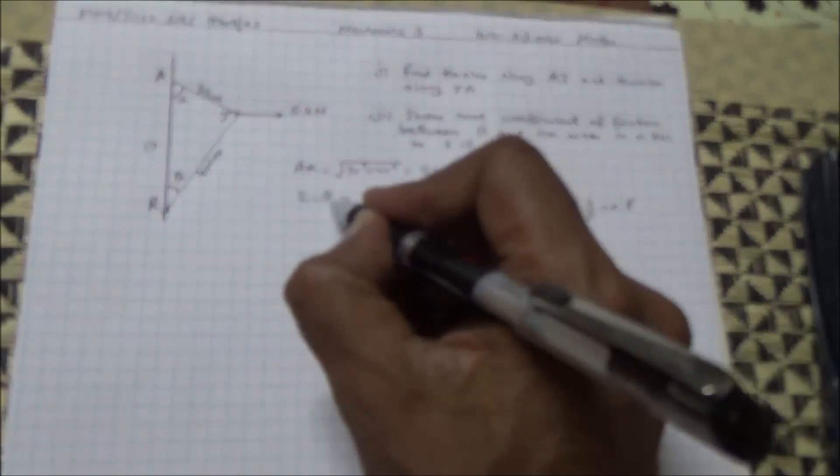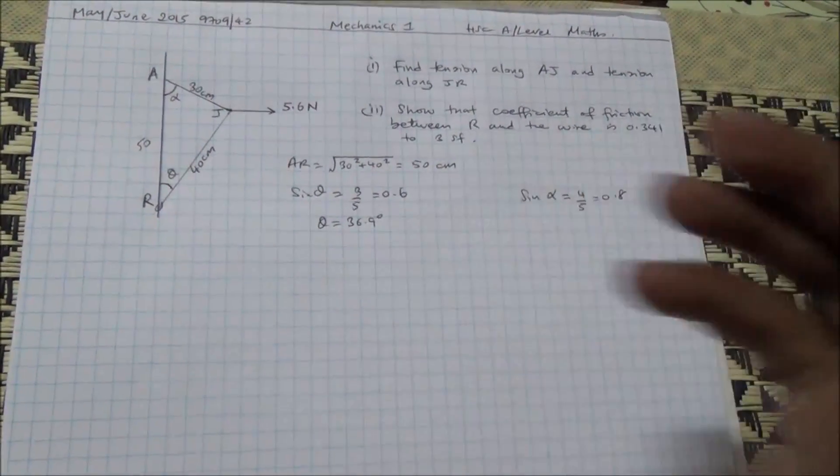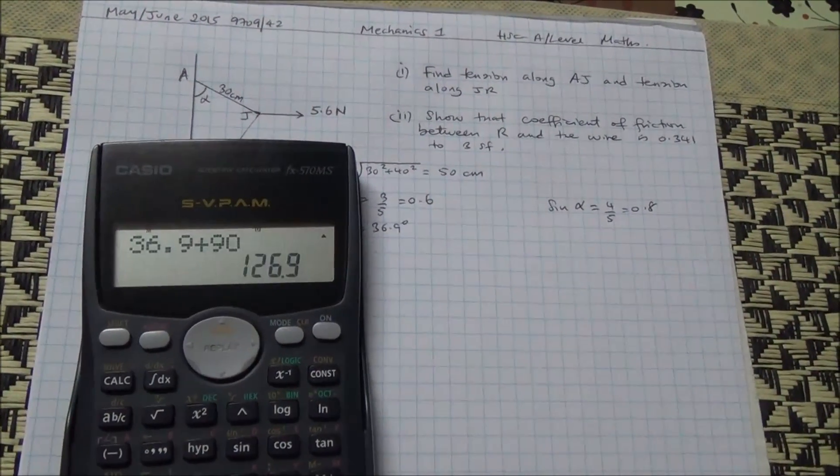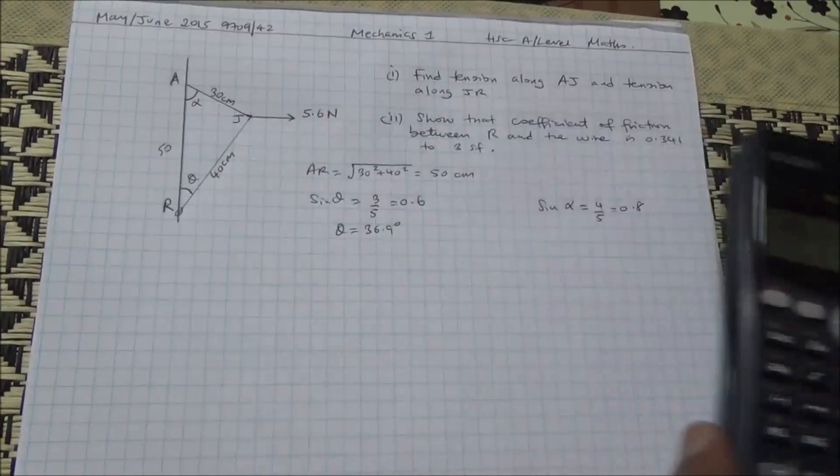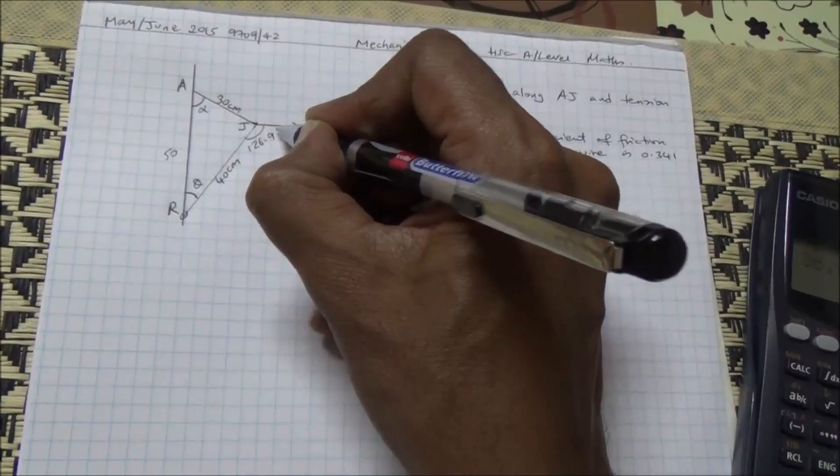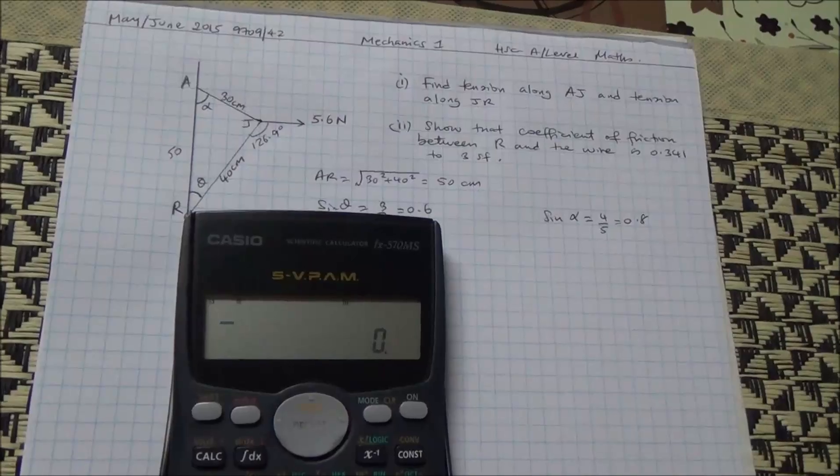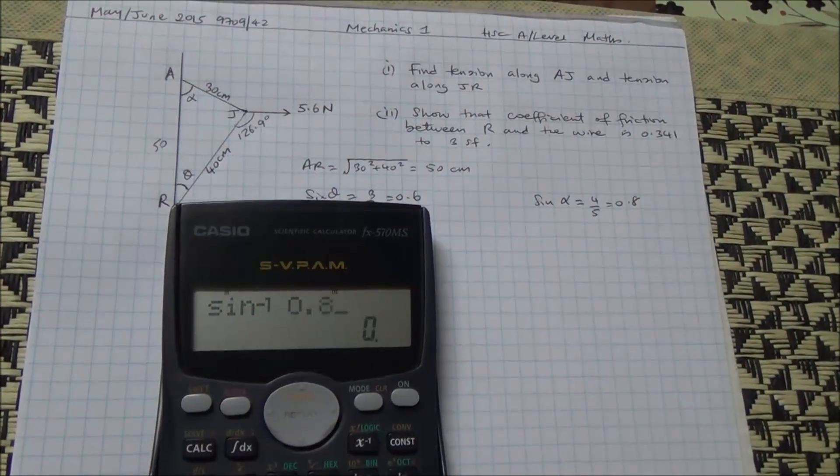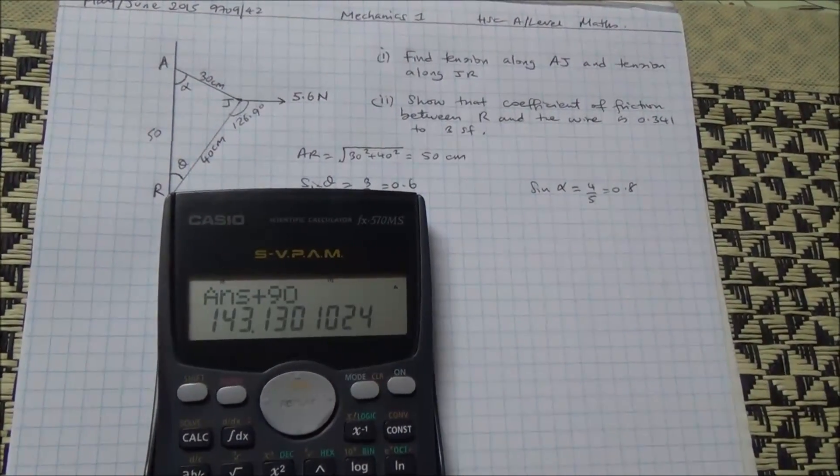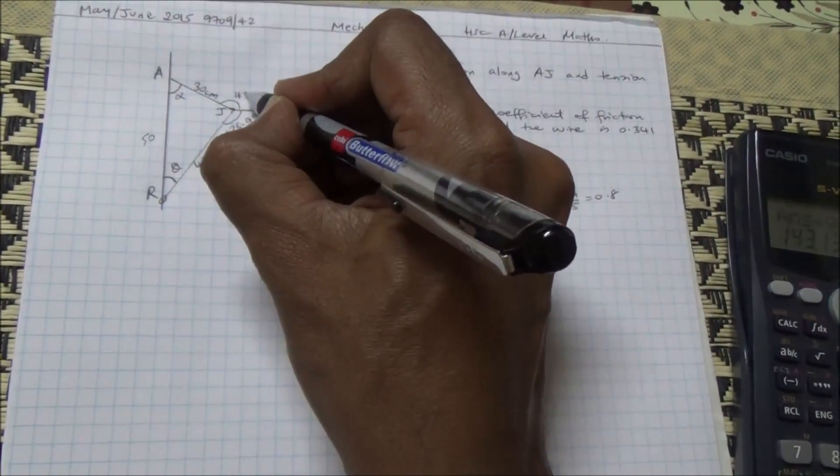So here we have 36.9 for alpha. And therefore, we have 36.9 plus 90 equals 126.9. So this is 126.9 degrees. Now for the other one, the inverse sine of 0.8 is 53.1. Add up to 90, we get 143.1. So this angle here is 143.1 degrees.